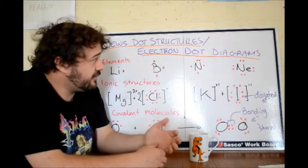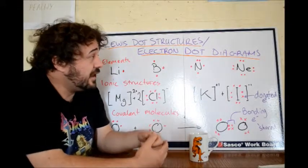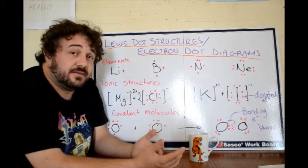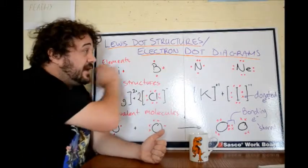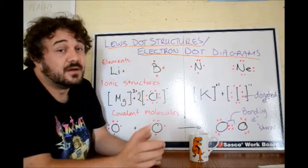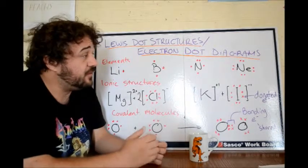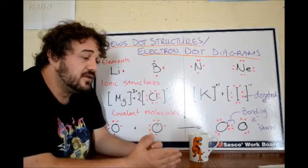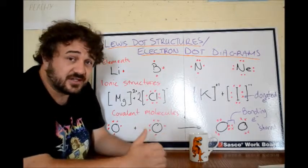Now, every, well, there are a couple of exceptions, but we'll say for now, every atom wants to obey the octet rule. Now, one way to think of the octet rule is that every atom wants eight electrons in the outer shell. Another way to think of the octet rule is that every atom wants to be closest to its nearest noble gas. So they all have eight in their outer shell.